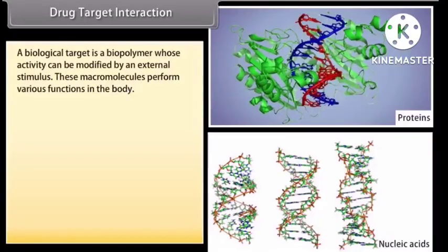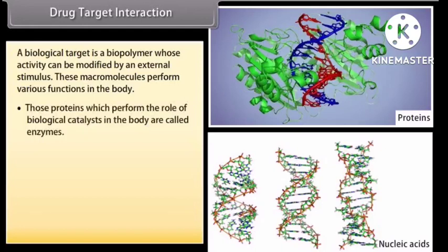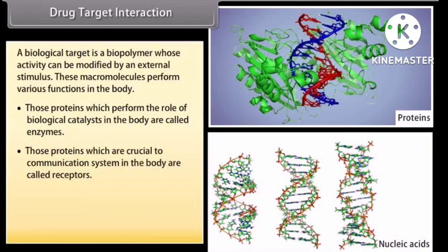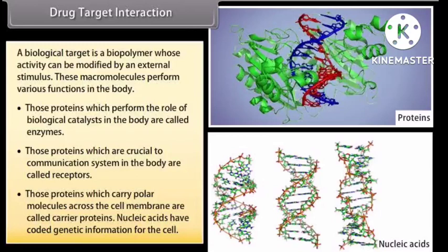A biological target is a biopolymer whose activity can be modified by an external stimulus. These macromolecules perform various functions in the body. Those proteins which perform the role of biological catalysts in the body are called enzymes. Those proteins which are crucial to the communication system in the body are called receptors. Those proteins which carry polar molecules across the cell membrane are called carrier proteins. Nucleic acids have coded genetic information for the cell.